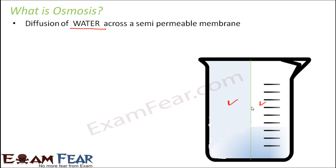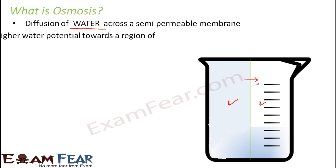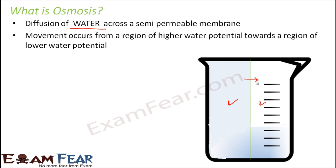Water will flow from the side where concentration is more to the side where concentration is less. This process is called osmosis — movement occurs from a region of higher water potential towards a region of lower water potential. The simple concept is that movement always happens from higher to lower.